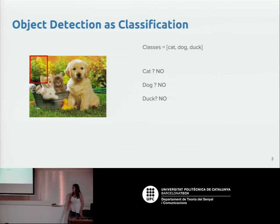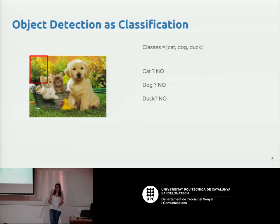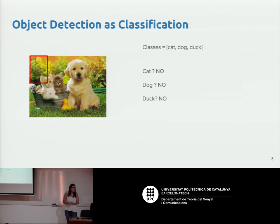You're already familiar with image classification — given an image, you assign a single class category. For instance, if there's a dog in the whole image, the category would be 'dog'. We can also think about object detection as a classification task: instead of thinking about the whole image, we define different localizations inside an image and perform a classification problem.